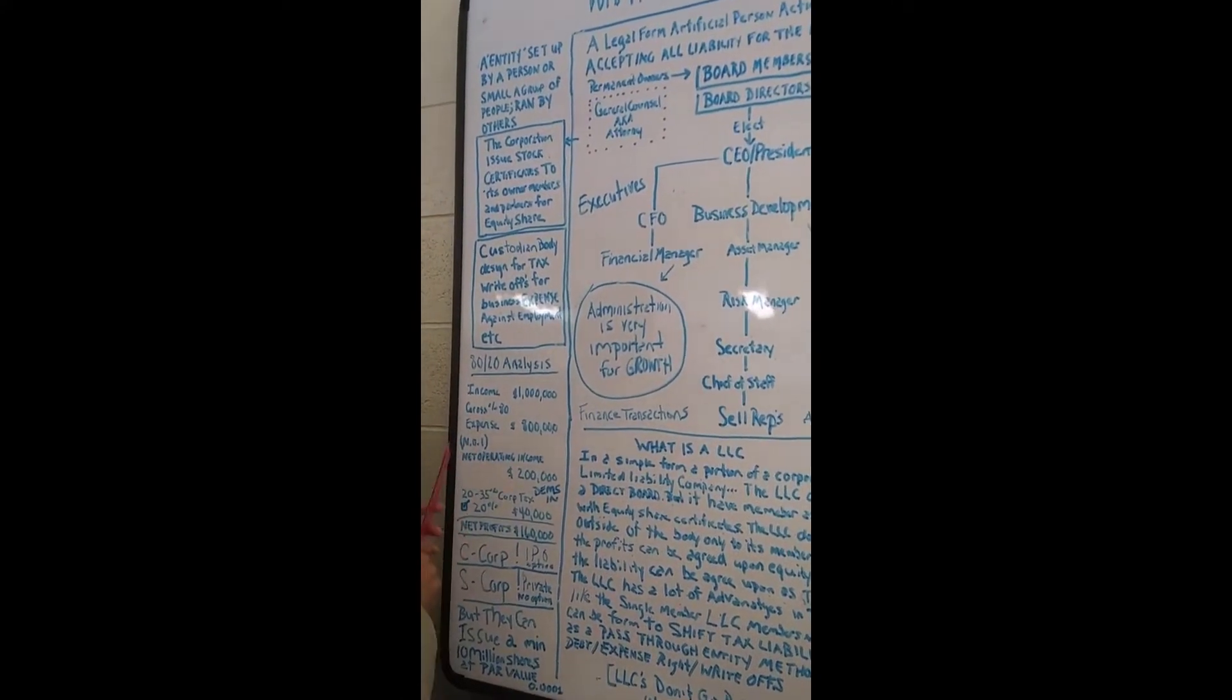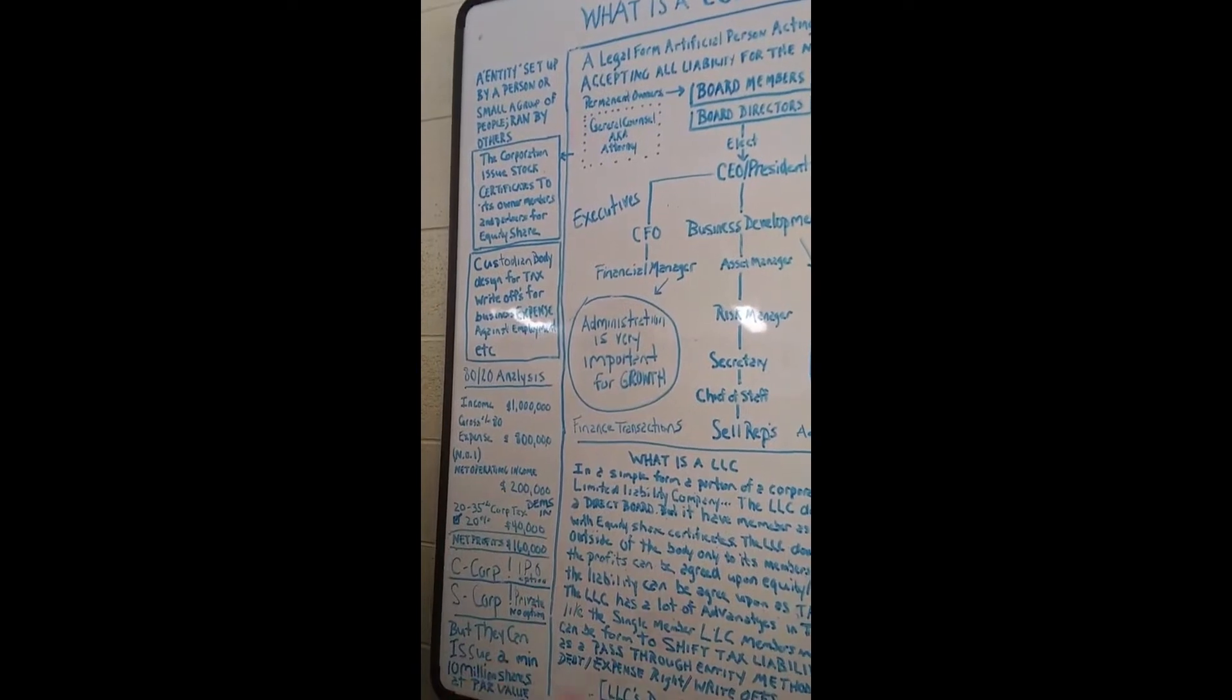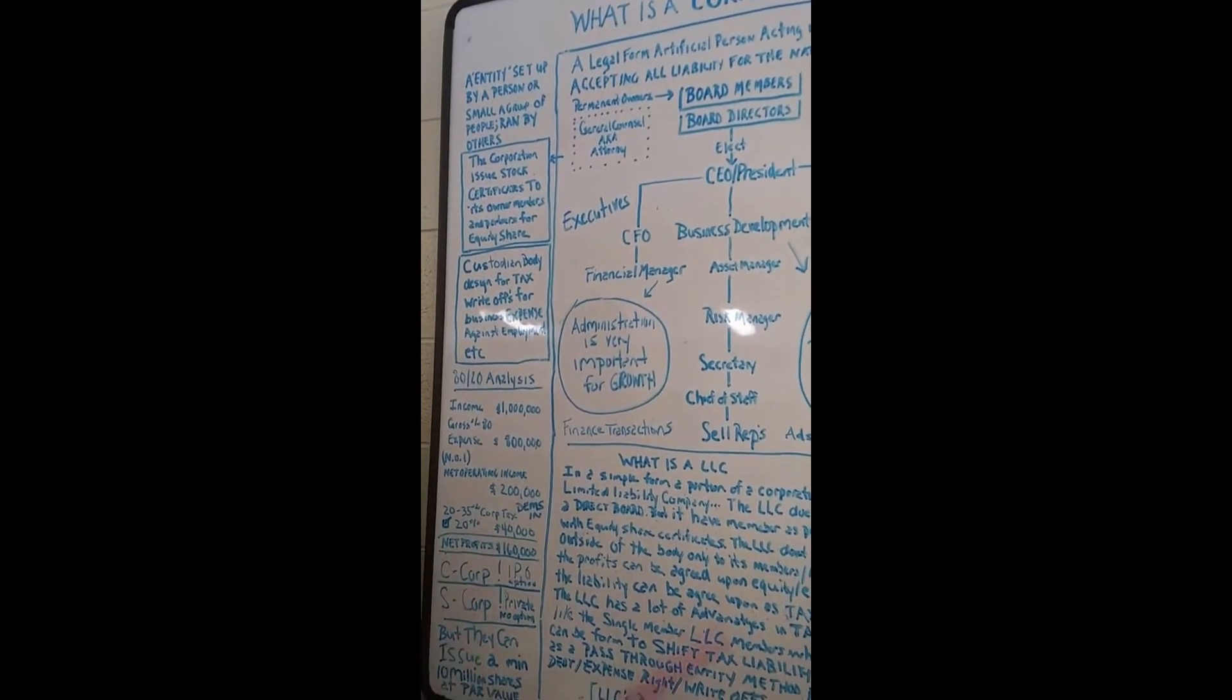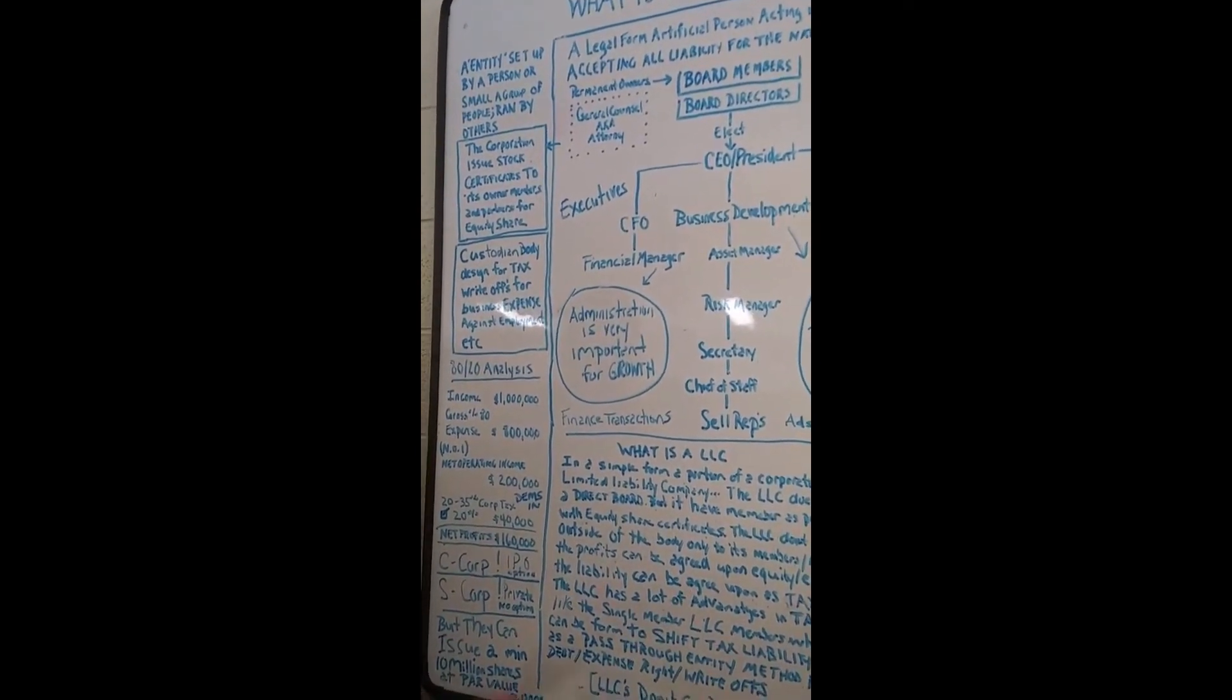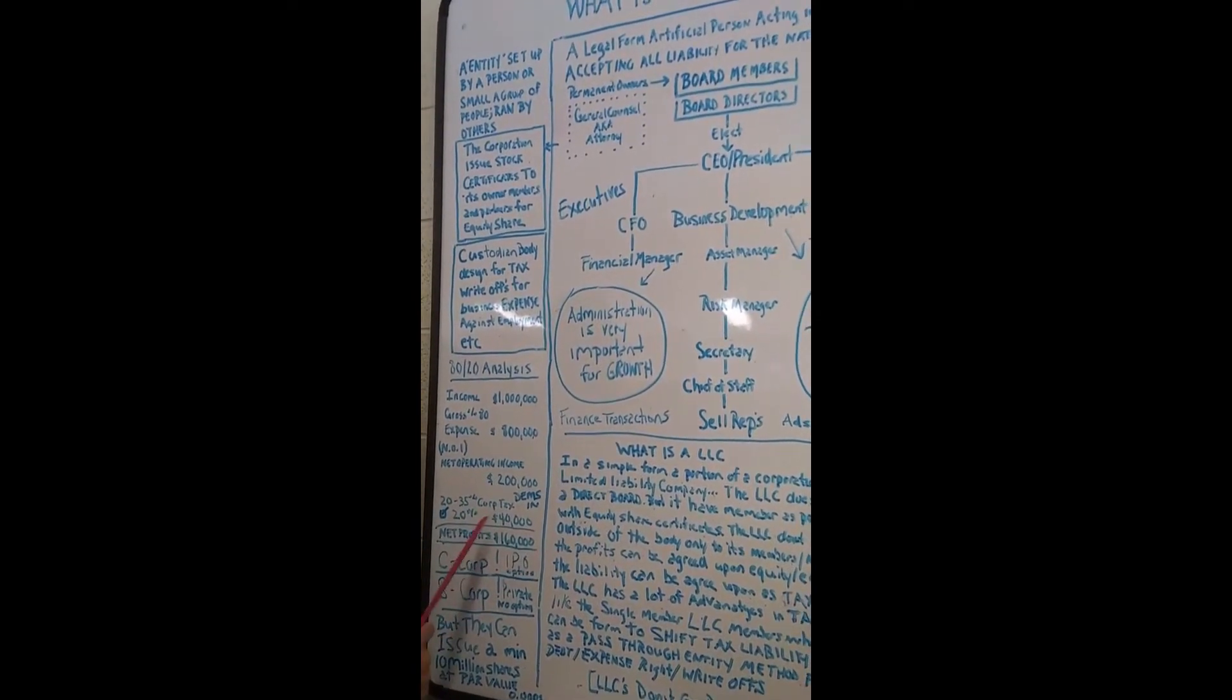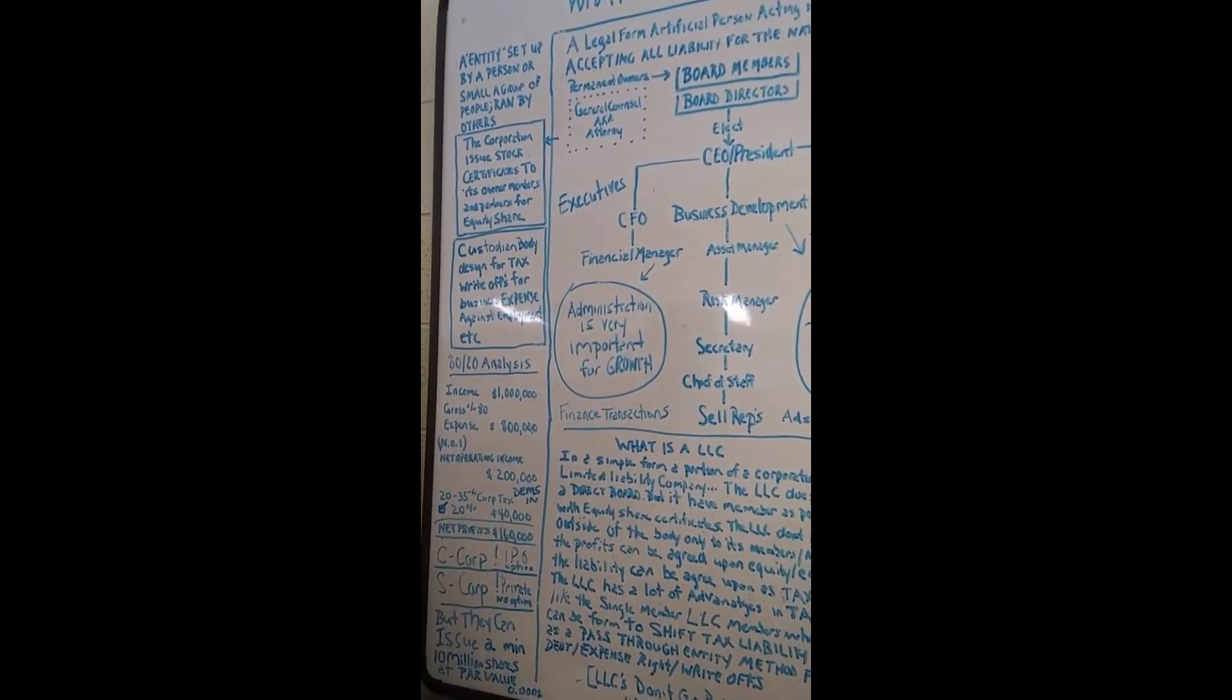The NOI, which is net operating income: $200,000. Since the Dems in, the Democrats in, the tax is probably 35%. We're going to use 20% carbon tax, which would be $40,000 on $200,000.